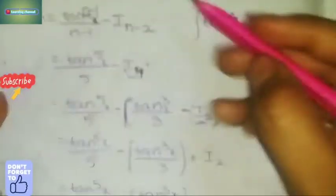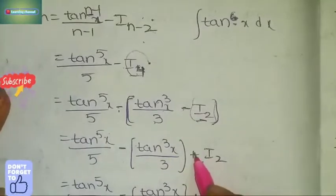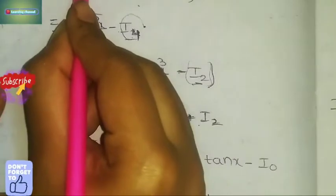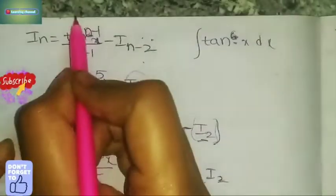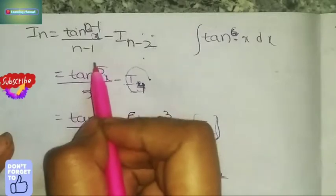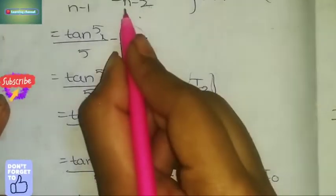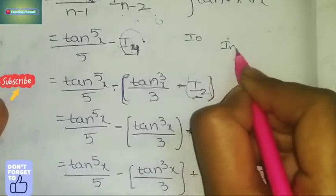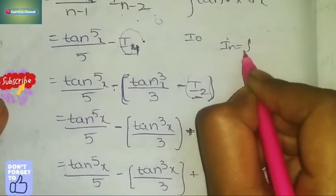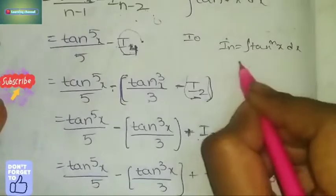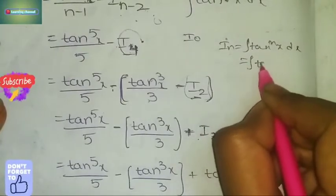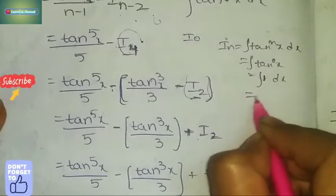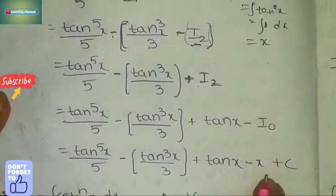Combining: minus into minus becomes plus I_2. Apply the formula for I_2: substitute n = 2, giving tan^(2-1) x / (2-1) - I_(2-2) = tan x / 1 - I_0. Now I_0 = integral tan⁰ x dx = integral 1 dx = x. So the final answer is: tan⁵x/5 - tan³x/3 + tan x - x + C.